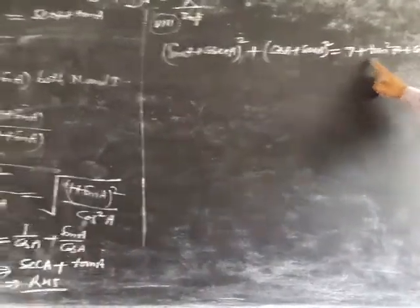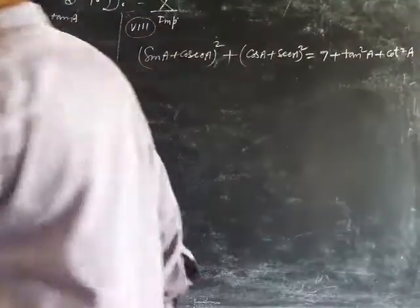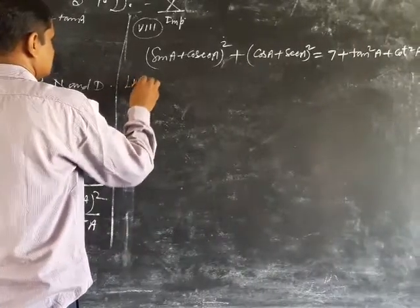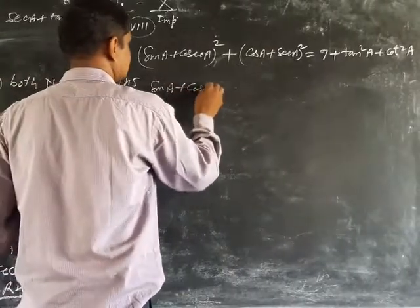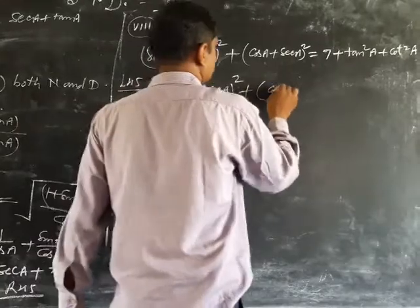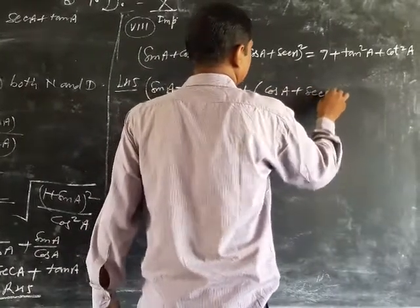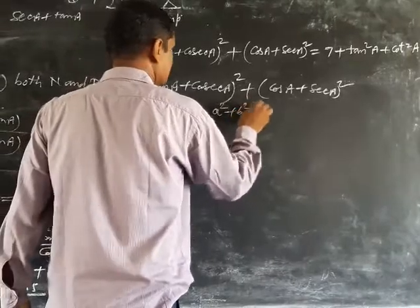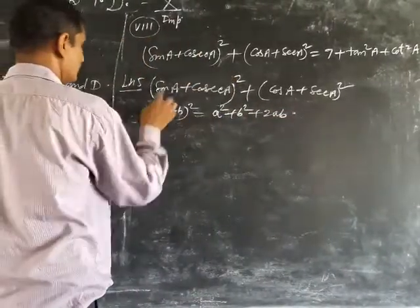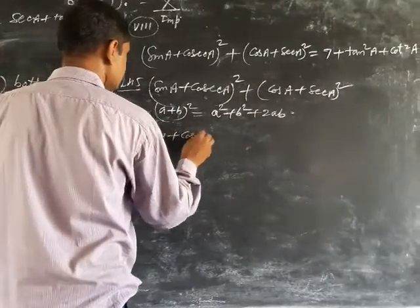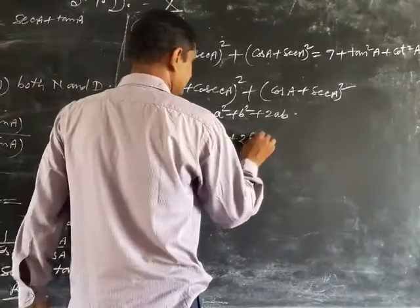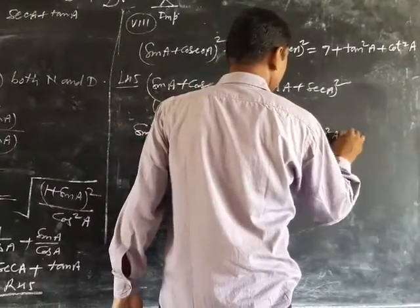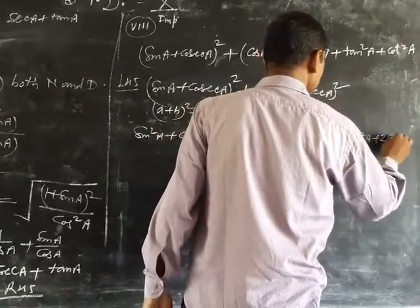sin A plus cosec A whole square plus cos A plus sec A whole square, taking left hand side. So, this is the question, right? sin A plus cosec A whole square, plus cos A plus sec A whole square. Using identity A plus B whole square, A plus B whole square equal to A square, plus B square plus 2AB. Both mean A plus B whole square to A square, sine square A plus cosec square A plus 2AB, sine A, cosec A. Plus, this will be A plus B whole square, so cos square A plus sec square A plus 2 cos A, sec A.